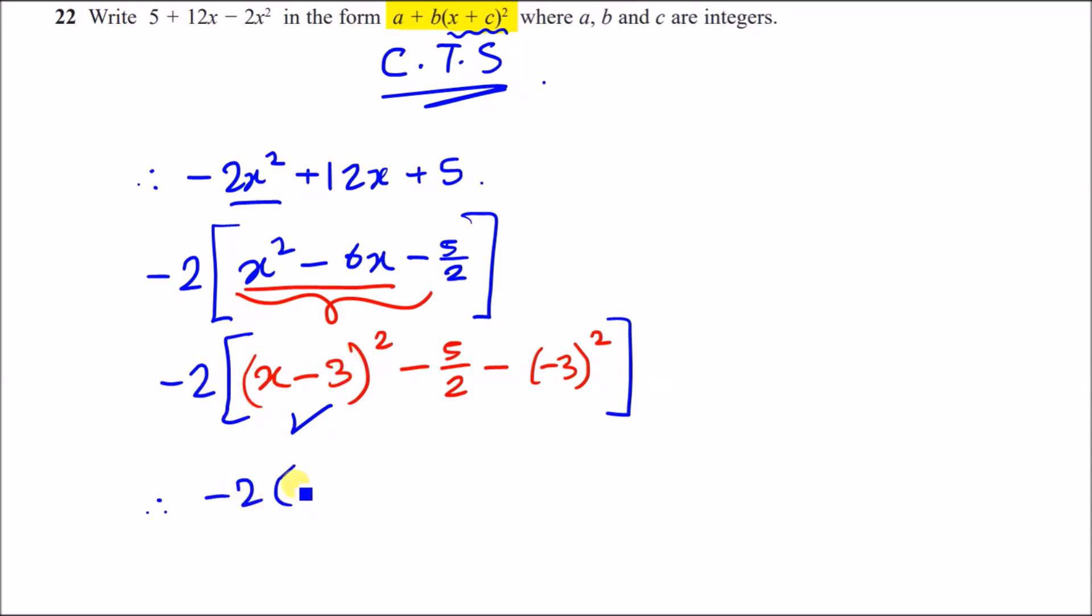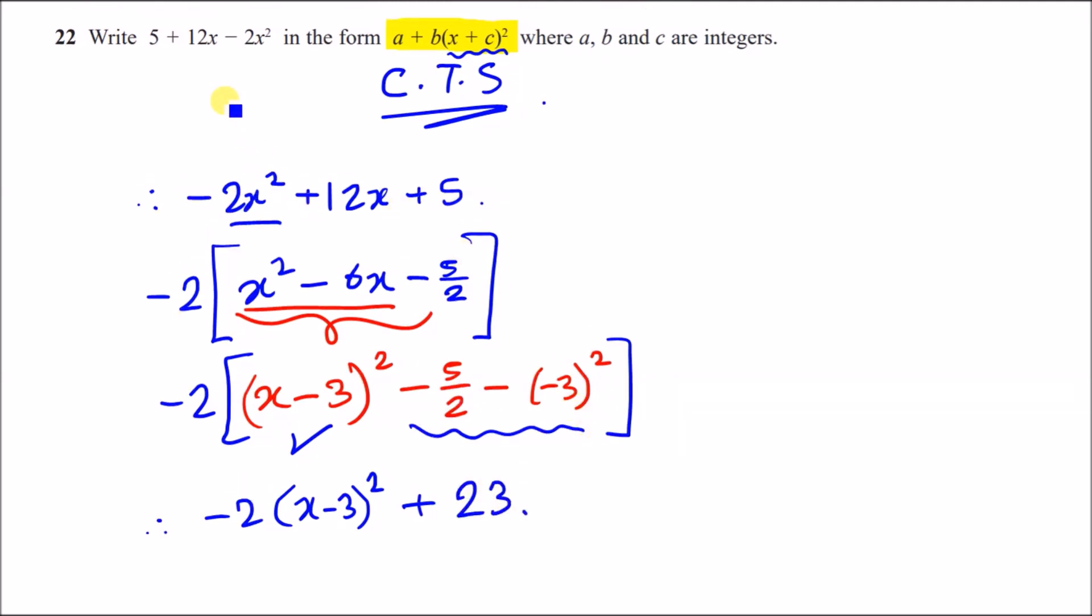And now we just want to times everything by minus 2. And by the way, we're not going to expand x minus 3 squared, because looking at the general form, they want x plus c all squared. So we've got minus 2 times x minus 3 squared, and then times minus 2 against all of these laws, and you should get plus 23. And that's it, guys. We're actually one more step away. So looking back at the general form, they want it to be a constant in verse. So that means 23 should be in front. So it should be 23 and then minus 2 times x minus 3 squared. And that's it. This is the end of the question, guys. We've actually completed the square.